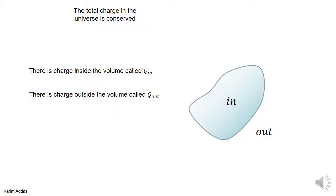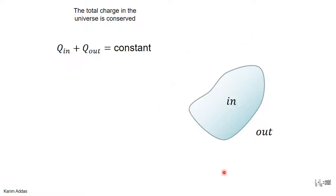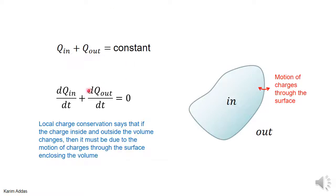In these slides we want to discuss the other way that charge can be conserved, which is local charge conservation. Let's say you have a region of space that outlines a certain closed volume — it separates space into an inside and outside. The total amount of charge inside is called Q_in and the total charge outside is called Q_out. If the total charge in the universe is constant, that means Q_in plus Q_out is constant, and taking the derivative of both sides gives us dQ_in/dt plus dQ_out/dt equals zero.